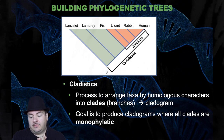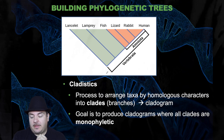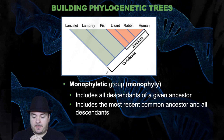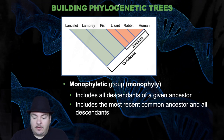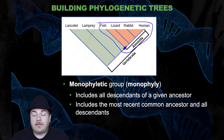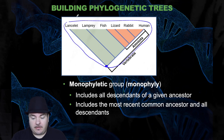How do you build a phylogenetic tree or an evolutionary tree? This uses cladistics, which is a process to arrange taxa by homologous characters into clades or branches on a cladogram. The goal is to produce cladograms where all clades are monophyletic. A monophyletic group includes all descendants of a given ancestor — it includes the most recent common ancestor and all of its descendants.